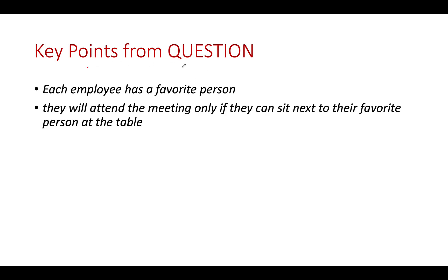Let's extract the key points from the question. Each employee has only one favorite person. They can attend the meeting only if they're allowed to sit next to their favorite person at the table. Let's take one case. Assume we have a person named A and his favorite person is B, so he's sitting next to it. However, there is another place held vacant in the circle. This can be filled by anyone across all the employees invited to the meeting.